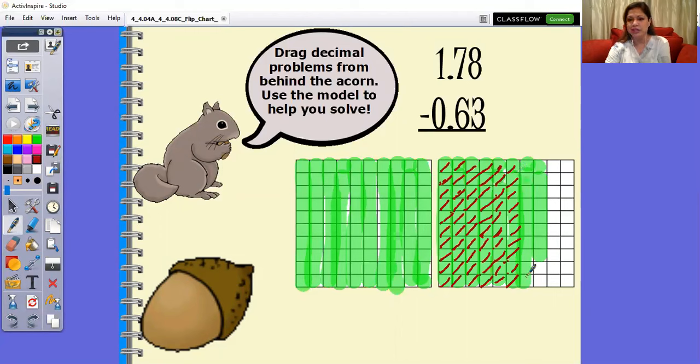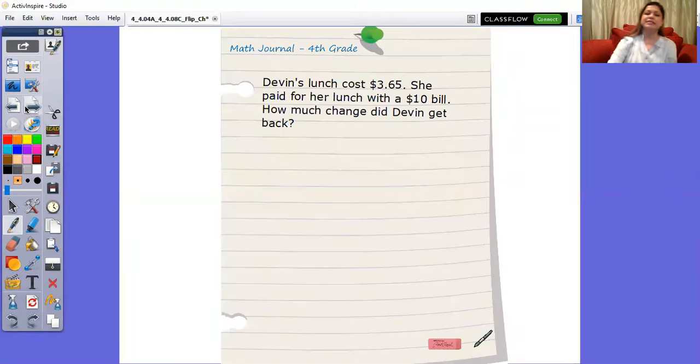I would slash out 63 of the hundreds. Right here I have already slashed out 60 of them, and I am now going to slash out 61, 62, 63 more. So I'm seeing that I am left with still one whole and then 10 and 5 of the hundreds left over - 15 hundredths.